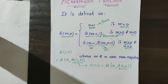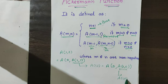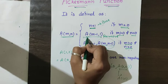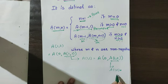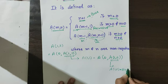Finding a(1,0): here n equals 0, so this goes to the second case. That gives a(m minus 1, 1), which is a(0, 1).